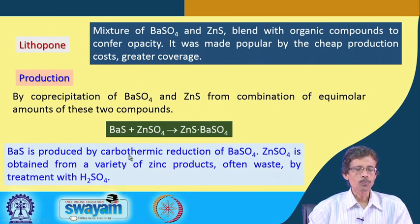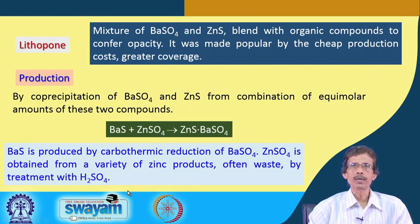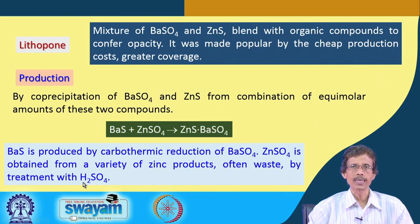Barium sulfate is produced by reduction, and zinc sulfate is obtained from a variety of zinc products, including zinc metal waste treated with sulfuric acid. Concentrated sulfuric acid is avoided due to its corrosive and oxidizing nature; a 1:1 sulfuric acid solution is used to convert zinc metallic scrap to zinc sulfate.